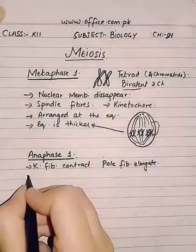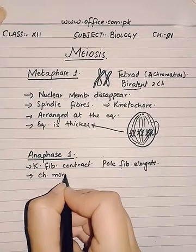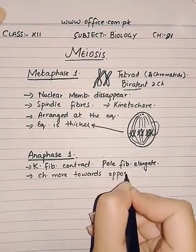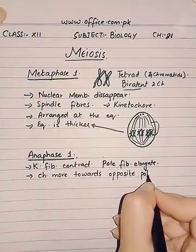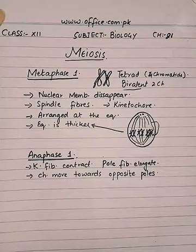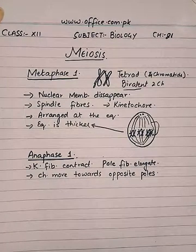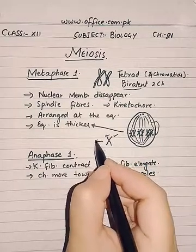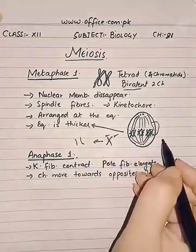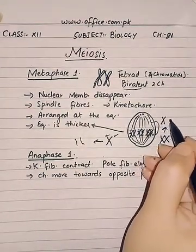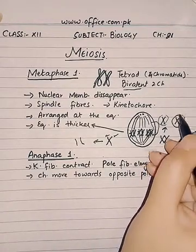From each homologous pair, one whole chromosome will move towards one pole and the other chromosome will move towards the opposite pole. It should be noted that in contrast to anaphase of mitosis — in mitosis, the sister chromatids separate — but in meiosis one, the whole homologous pair is separated: one pole gets one whole chromosome and the other pole gets the other whole chromosome.